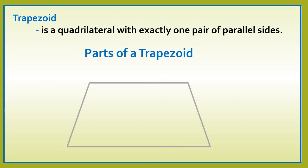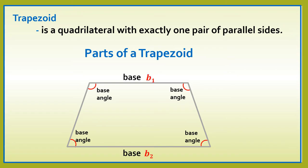What are the parts of a trapezoid? Let us consider this trapezoid. All angles of a trapezoid, we call them base angles. A pair of parallel sides of a trapezoid, we call them bases or B1 and B2. And the other opposite sides of a trapezoid, we call them legs.